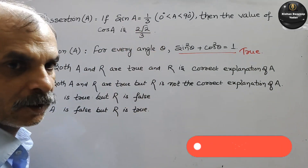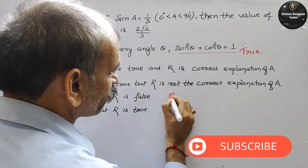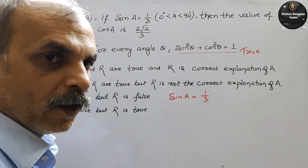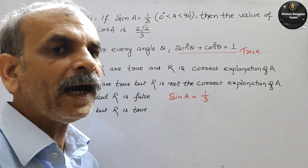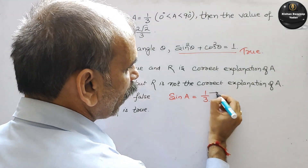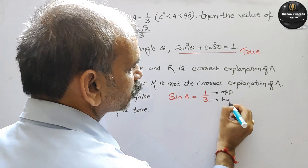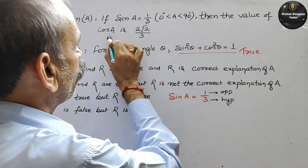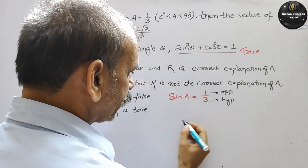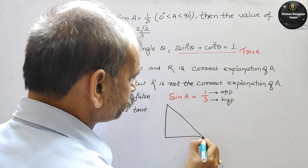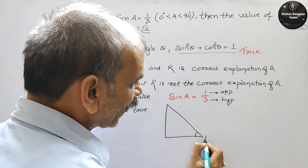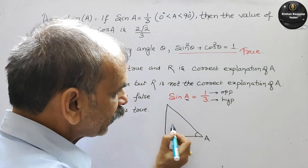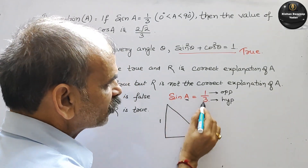अब हम इसको solve करते हैं. यहाँ पर दिया है sin A = 1/3. और sin हमारा क्या होता है? opposite by hypotenuse. तो यह हो गया आपका opposite और यह हो गया आपका hypotenuse. This is your triangle. Suppose this is your angle A. तो इसका opposite is 1 और 3 is hypotenuse.